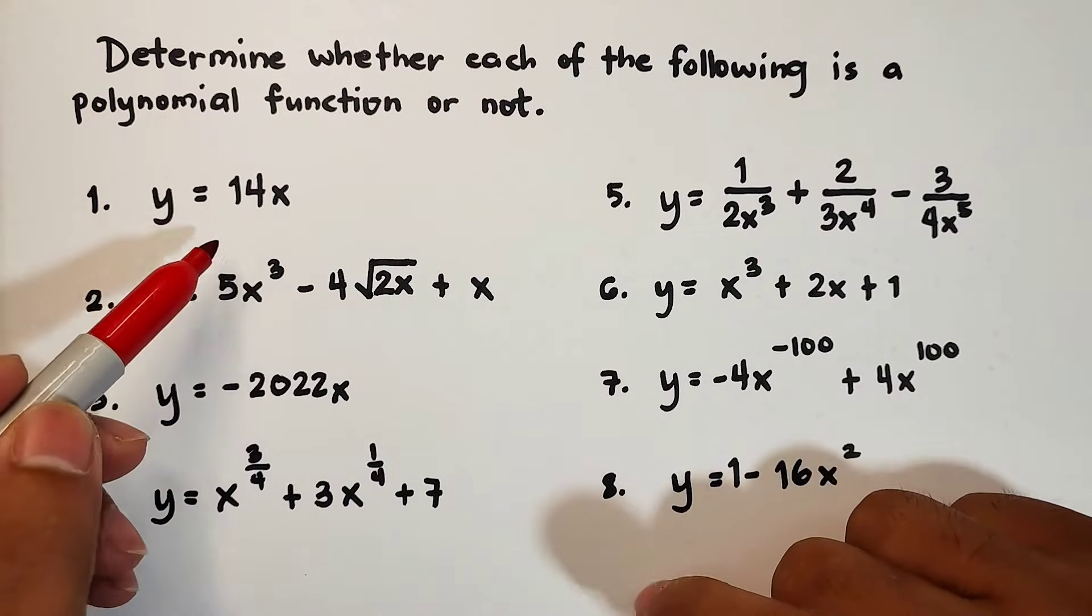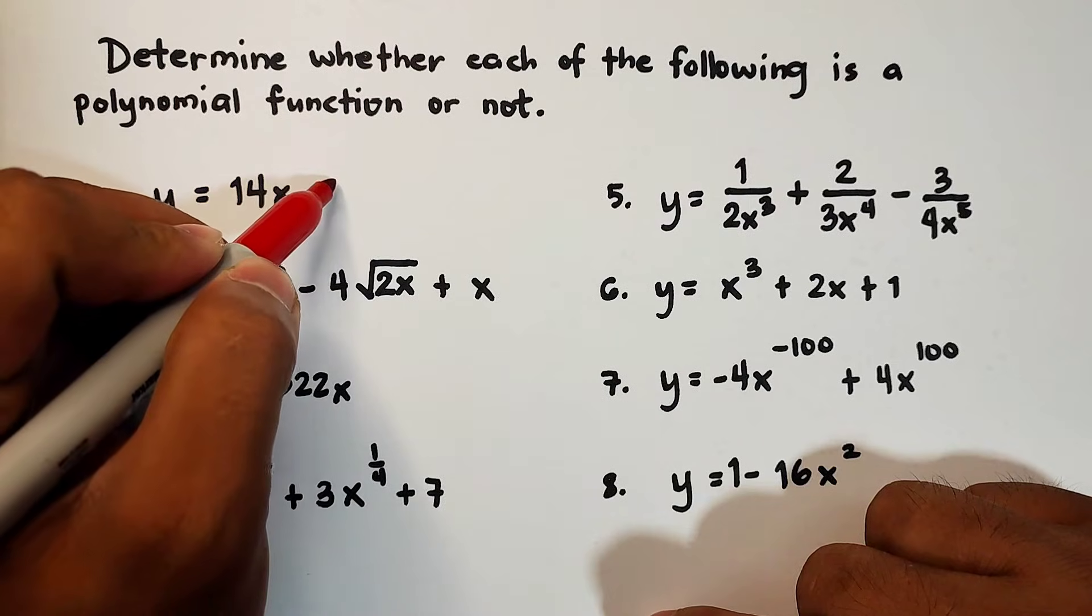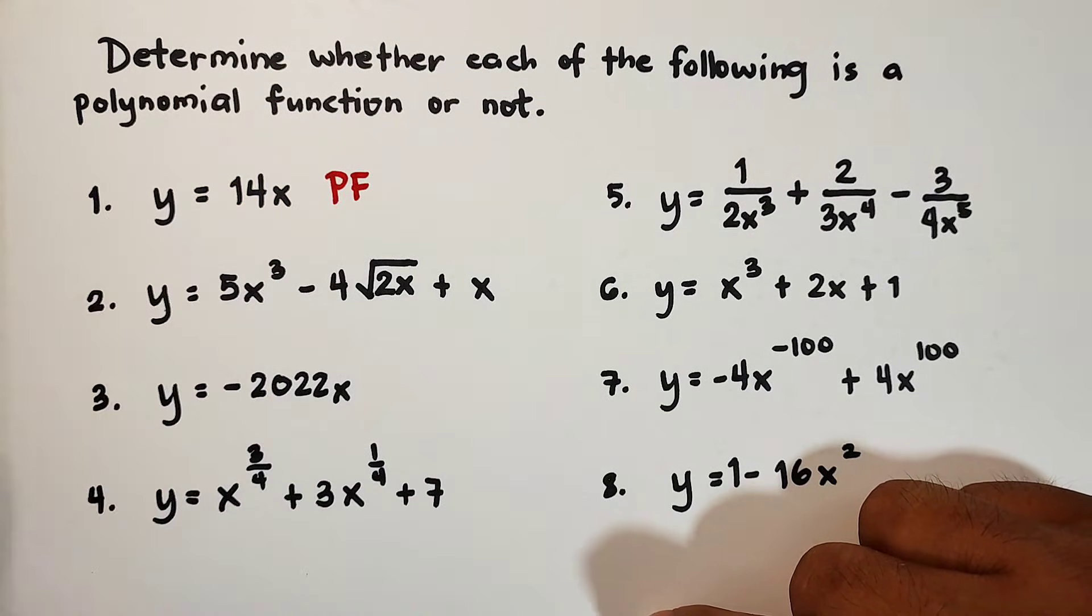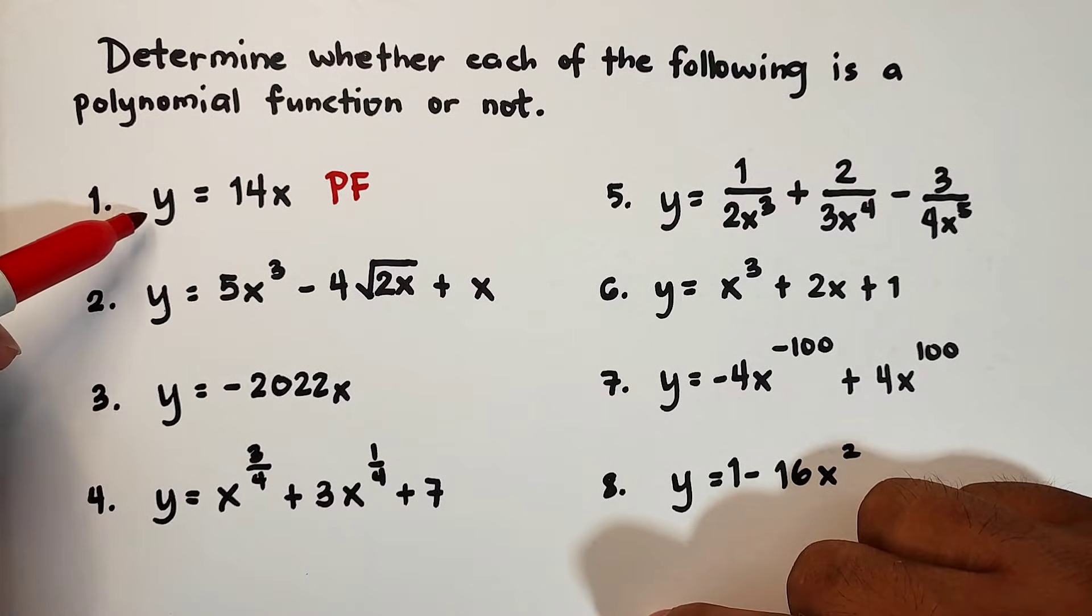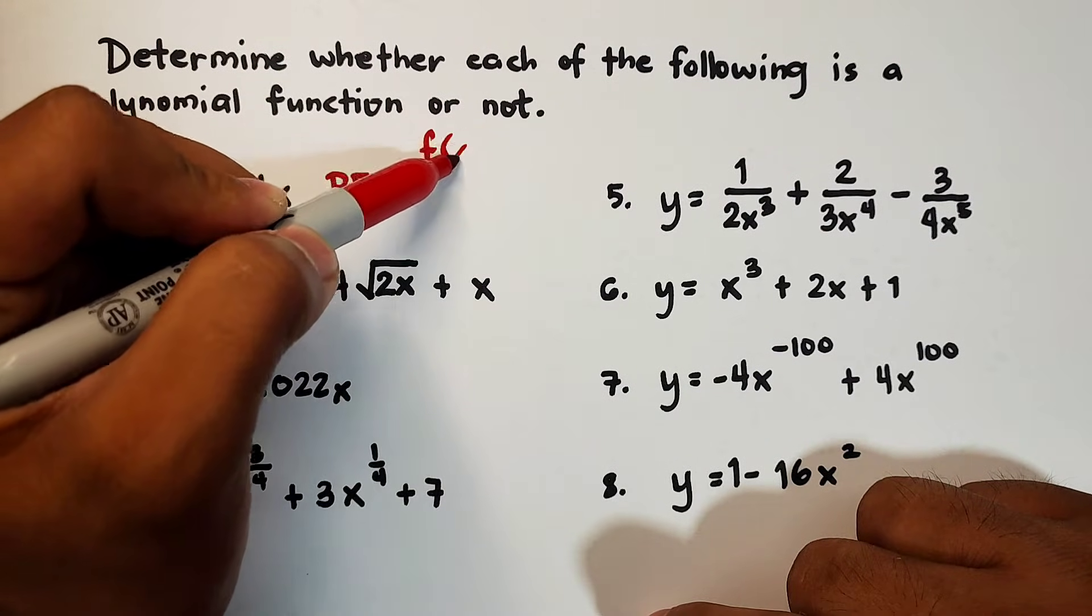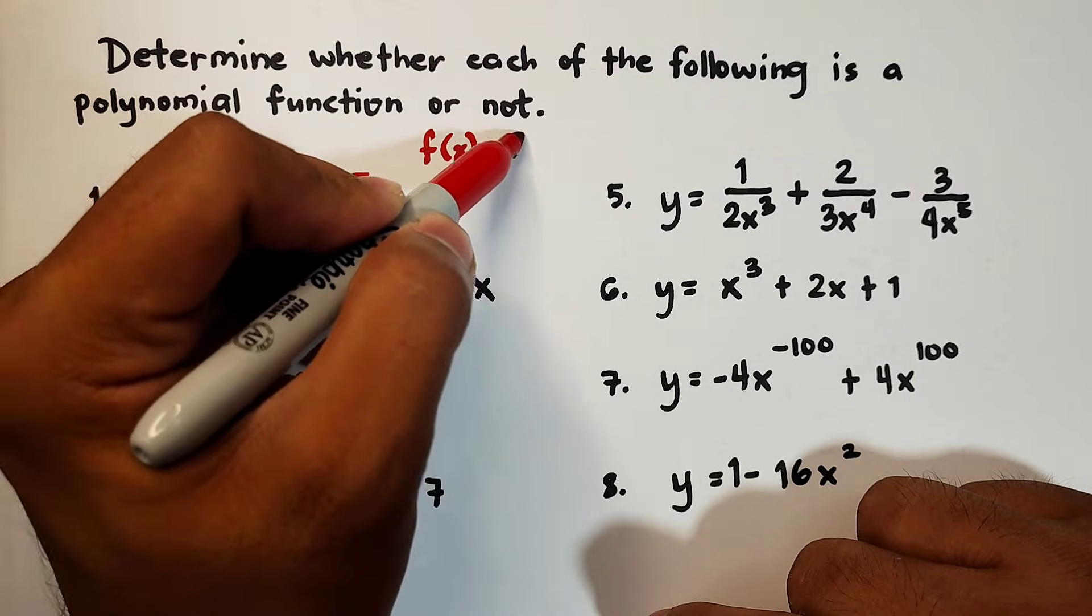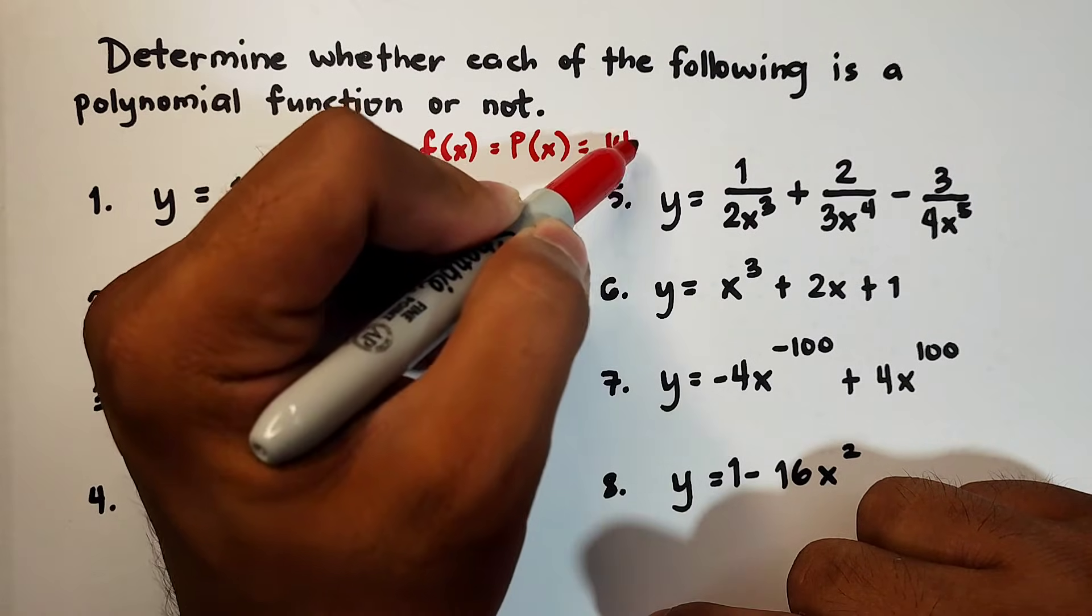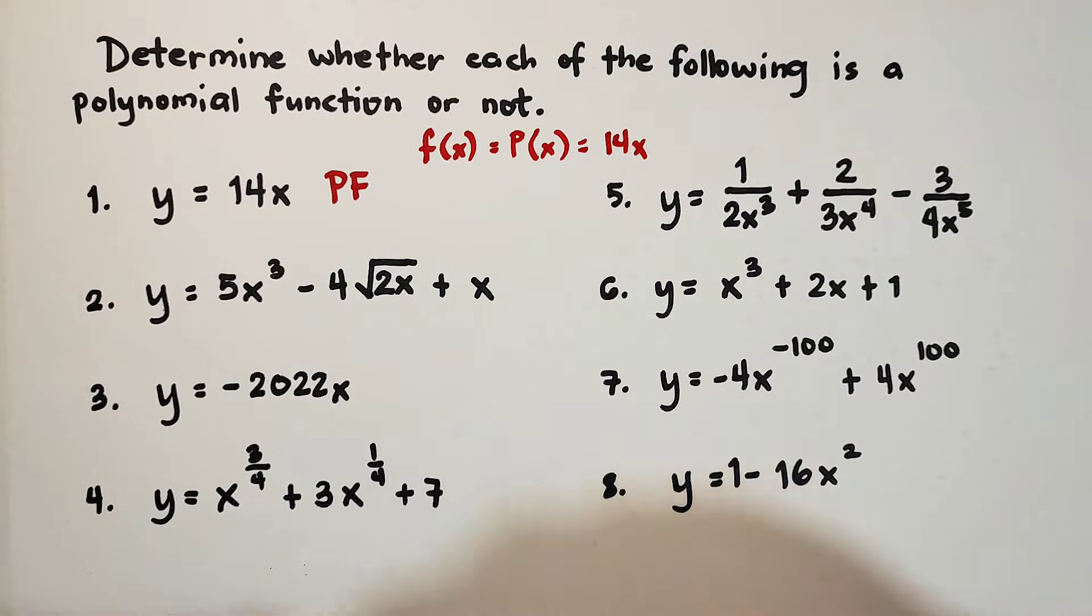We have y is equal to 14x. This one is definitely an example of polynomial function. Later on, I will tell you why some will not be polynomial function. By the way guys, if we have y equals 14x, that is the same as f of x or p of x is equal to 14x. Y is the same as p of x or f of x. So let's continue.